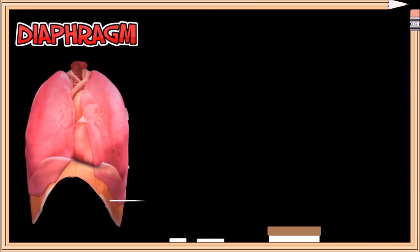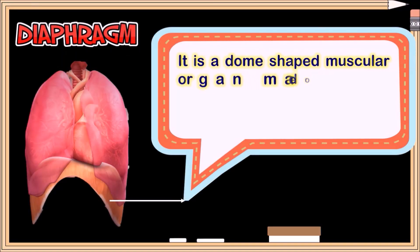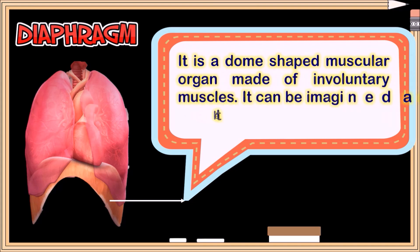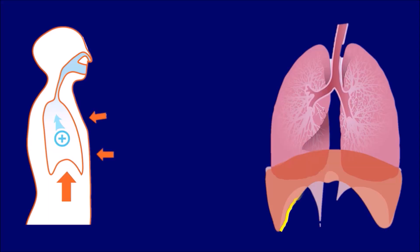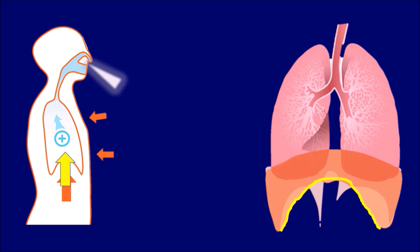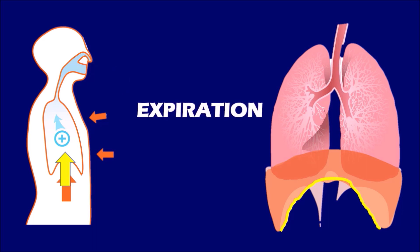The diaphragm has a muscular dome-shaped structure made of involuntary muscles. It can be imagined as the floor of the lungs. When the diaphragm is relaxed, it attains a dome shape. As a result, a lot of pressure is exerted on the lungs, which pushes the air inside the lungs towards the outside through the respiratory tract.